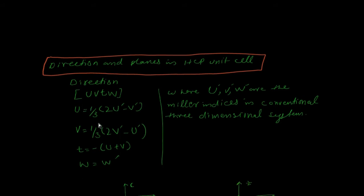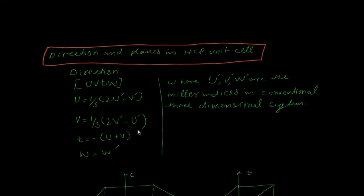The formulas are: u = (1/3)(2u' - v'), v = (1/3)(2v' - u'), t = -(u + v), and w = w', where u', v', and w' are the Miller indices in the conventional three-dimensional system.